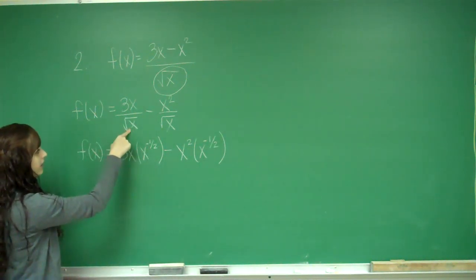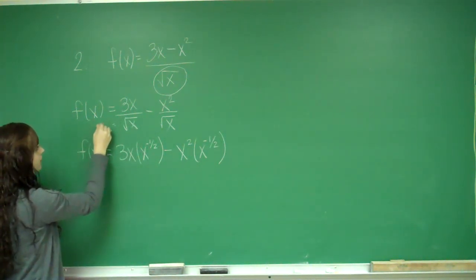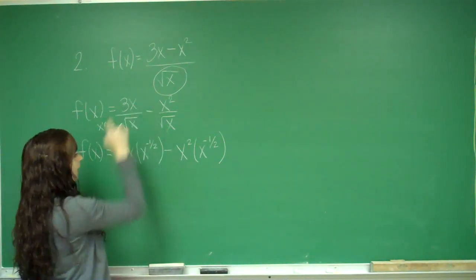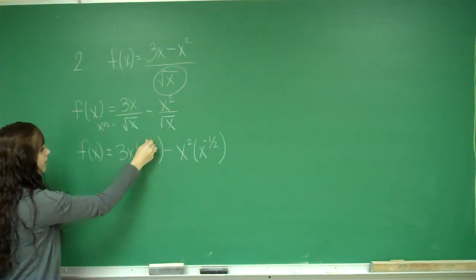It is a negative one half because this is equal to x to the one half. And then when I bring it to the top, I subtract. I have a negative exponent.